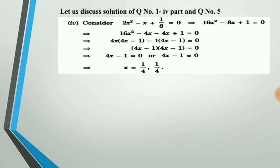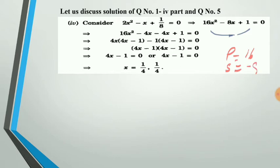For question 1(iv), we need to find the roots of 2x² - x + 1/8 = 0. Taking LCM, this becomes 16x² - 8x + 1 = 0. The product is 16 and the sum is minus 8. We break minus 8 into minus 4 and minus 4, since the product is 16 and the sum is minus 8. Factorizing gives x = 1/4 and x = 1/4.